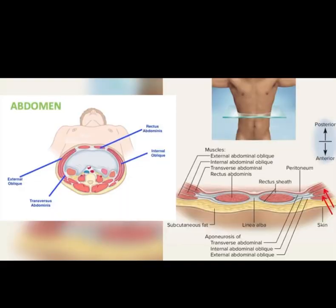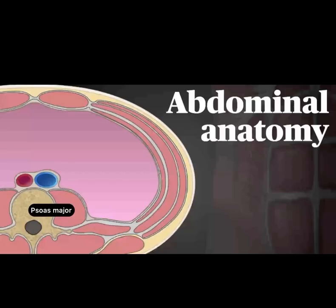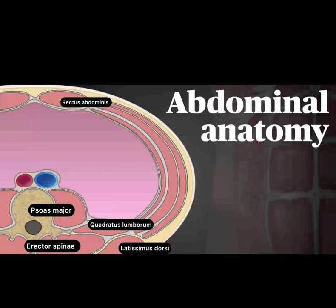To understand the abdominal anatomy, let's discuss its muscles, nerve supply, and dermatomes. The abdominal wall posteriorly consists of psoas major, erector spinae, quadratus lumborum, and latissimus dorsi. Anteriorly there is rectus abdominis. The lateral wall consists of three layers: the innermost is transversus abdominis, the middle is internal oblique, and the outermost is external oblique.